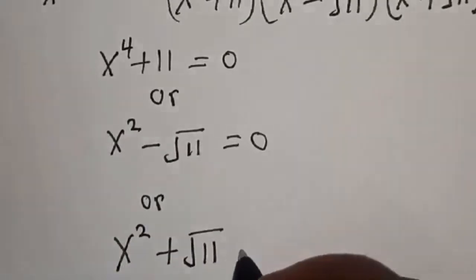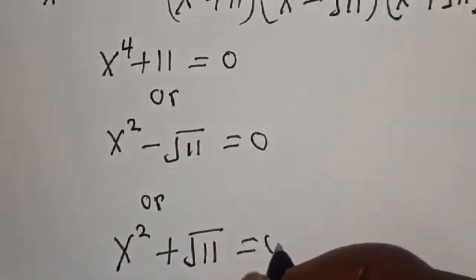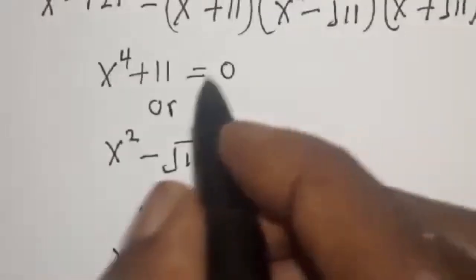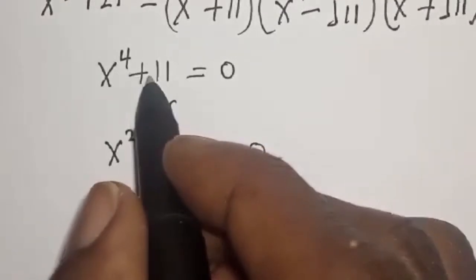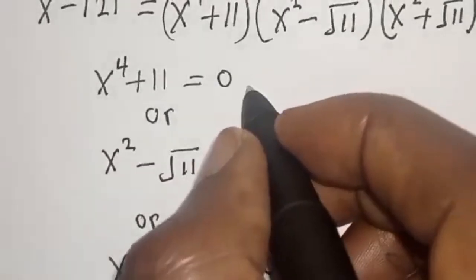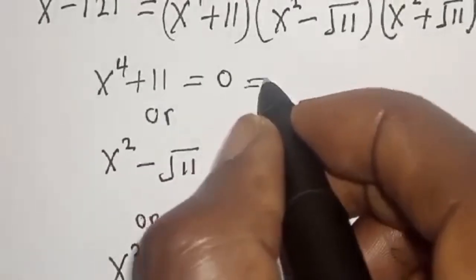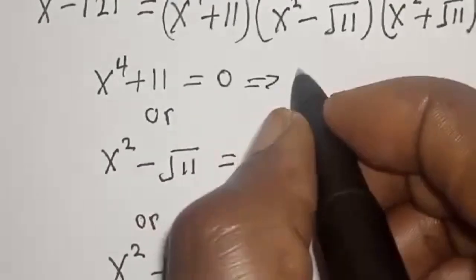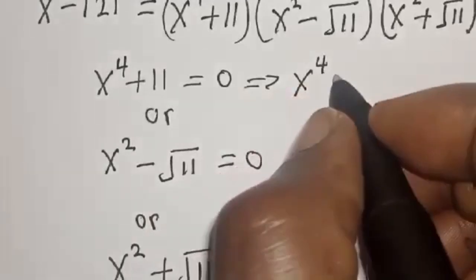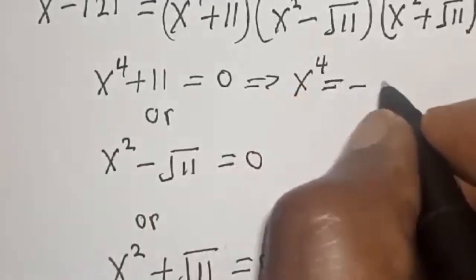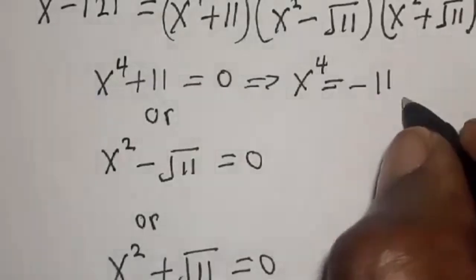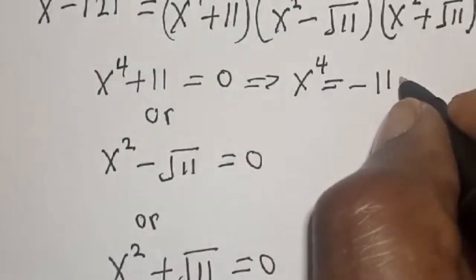If s raised to power 4 plus 11 is equal to 0, then this implies that s raised to power 4 is equal to minus 11. Now we reject this.